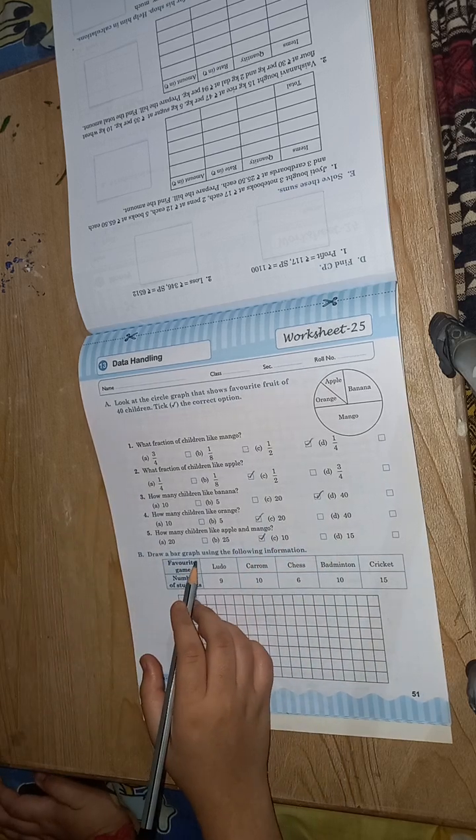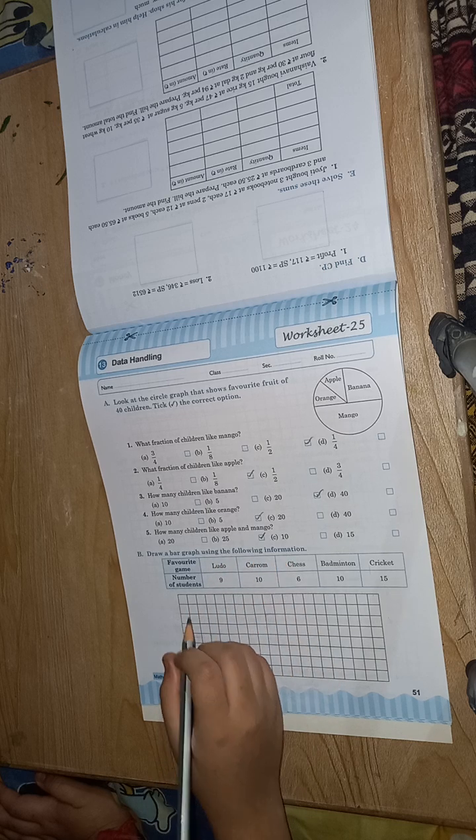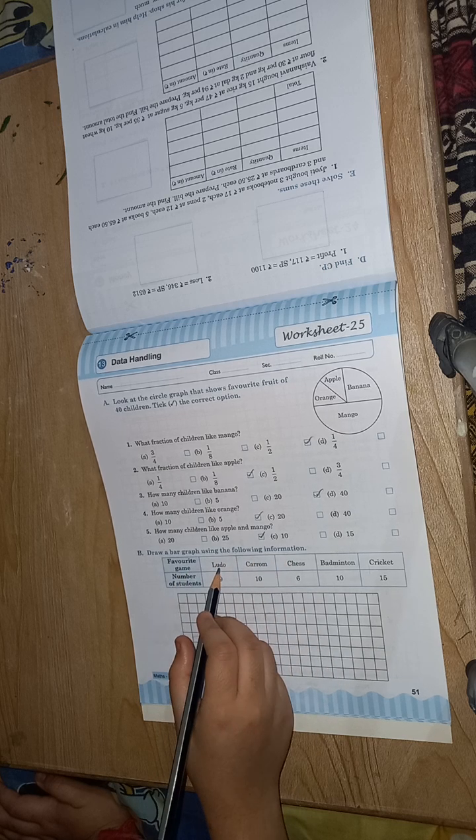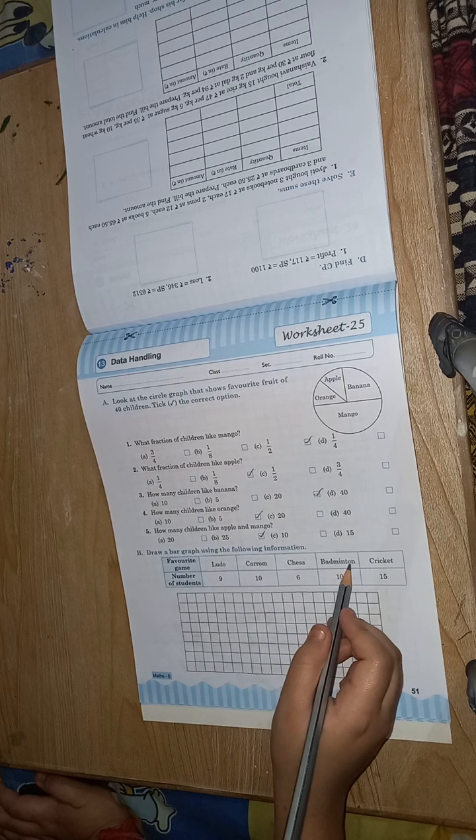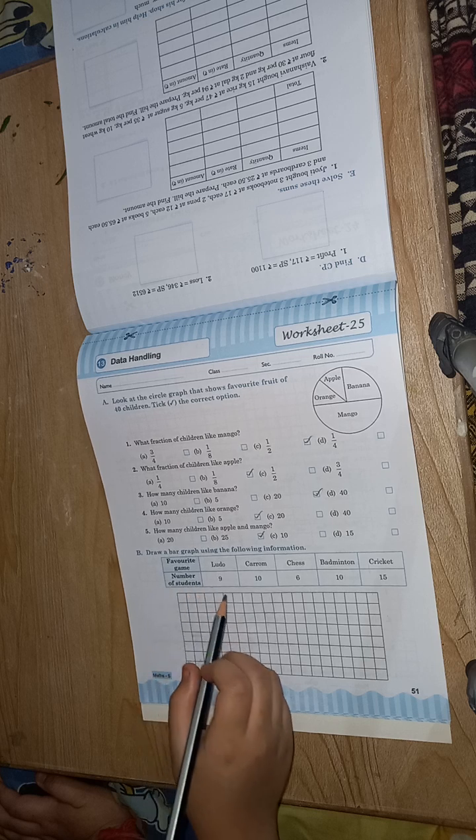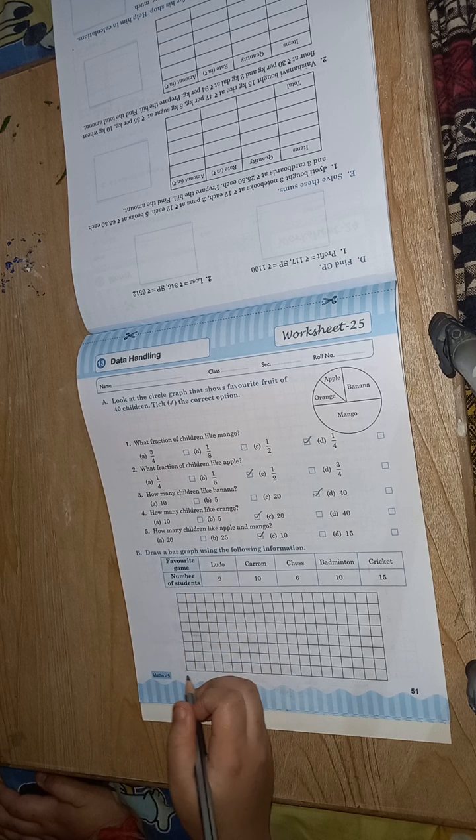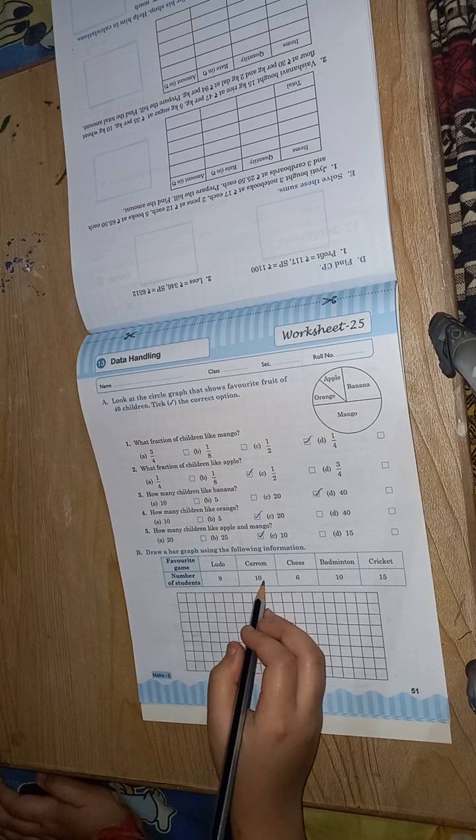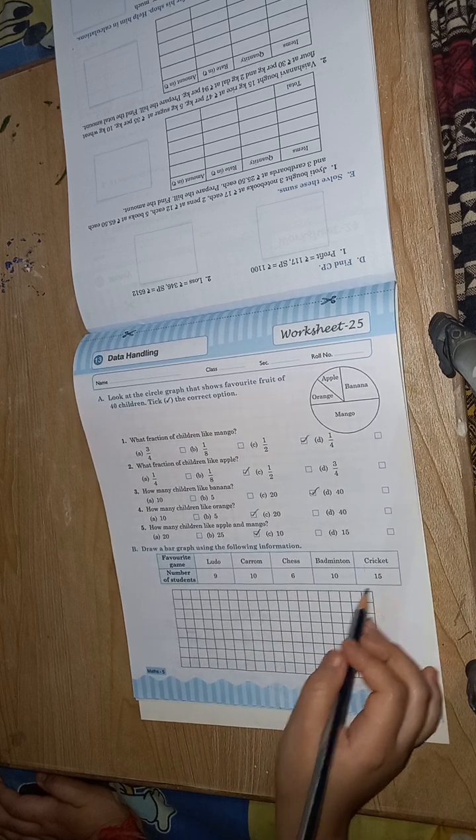Draw a bar graph using the following information. Favorite games: Ludo, Carrom, Chess, Badminton, Cricket. Number of students: 9, 10, 6, 10, 15.